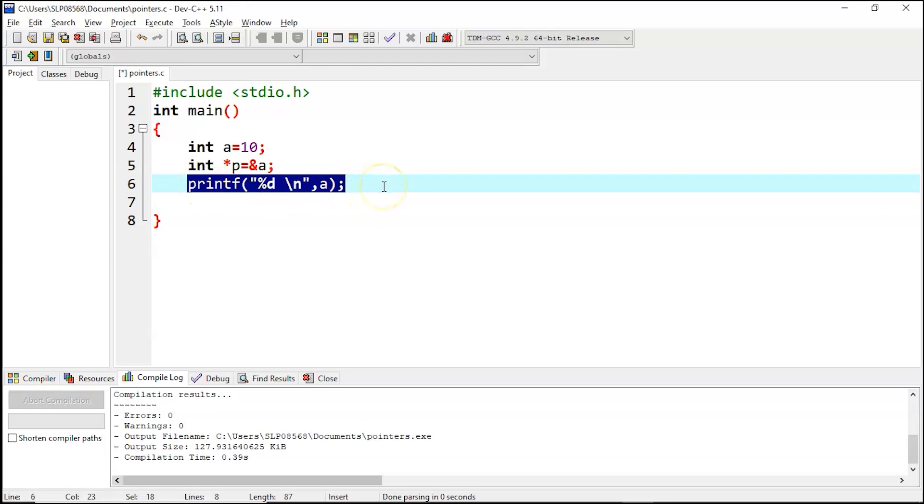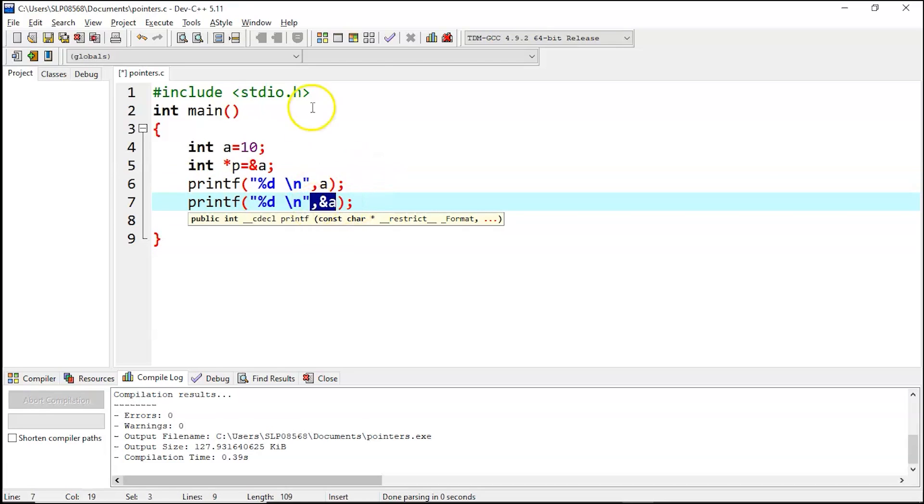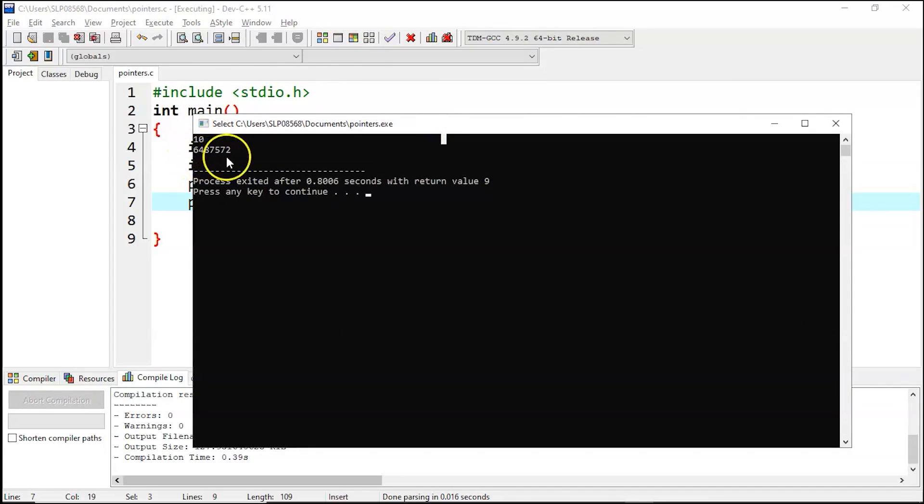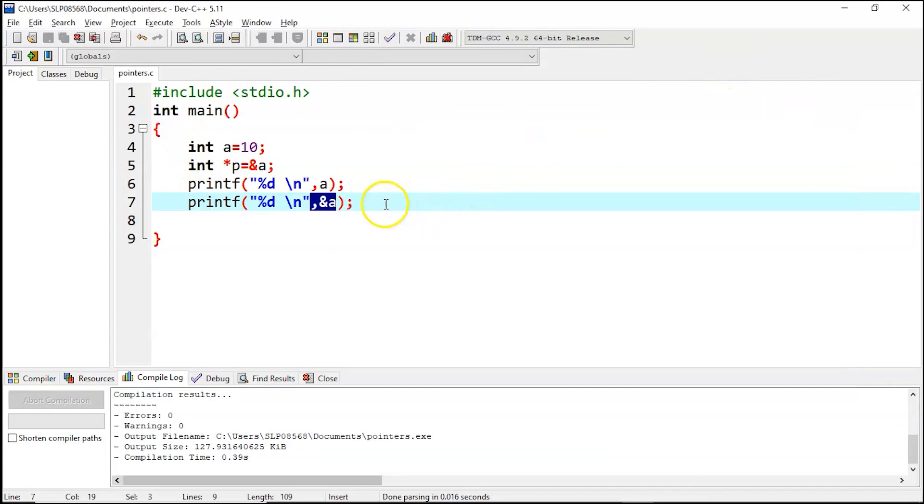Now if you want the reference of a, that means the address, let's give here reference to know the address of a and let's execute it. So here a is stored at this address. Now let's print the variable p and see the output.